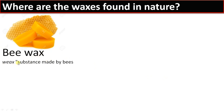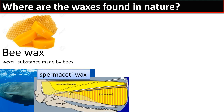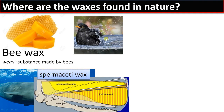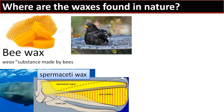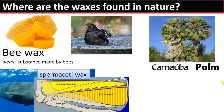Then there is spermaceti wax, found in the sperm whale. There is an organ called the spermaceti organ that stores this wax. There is also wax on bird feathers and aquatic plants. Plant waxes include carnauba palm — a Brazilian palm that produces wax.